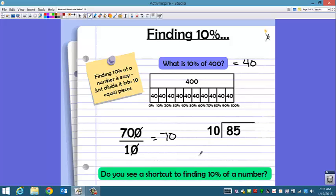What about 10% of 85? Well, let's divide. You can do it long division. 10 goes into 85 eight times, which is 80. Subtract, I have a remainder of five.